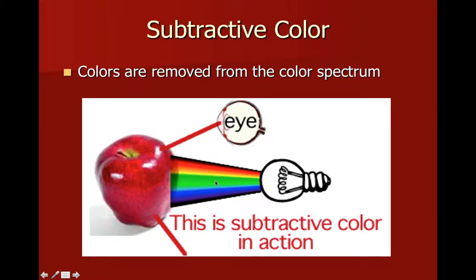So as that white light is projected from the light bulb and it hits an object like this apple, the surface of the apple will absorb or subtract different wavelengths of light. So green, yellow, orange, blue, purple - these are all absorbed by the surface of the apple. The only wavelength they can't absorb is red. So the red light bounces off of the apple and it hits our eye and we perceive the apple to be red because it's the only color it couldn't subtract from the full color spectrum of the white light.